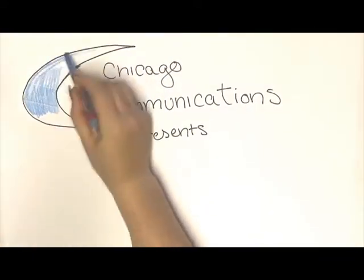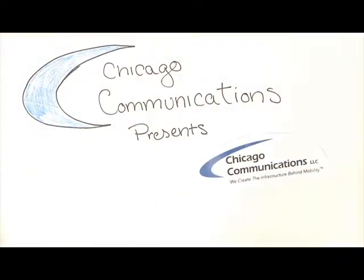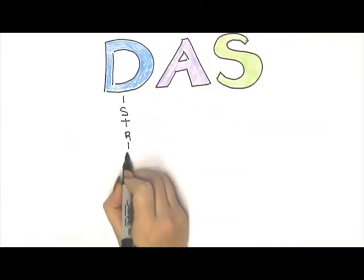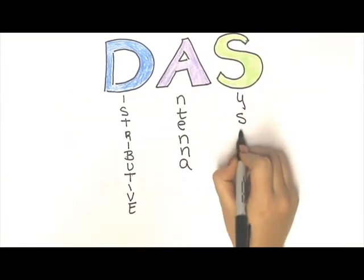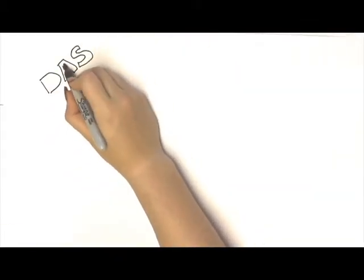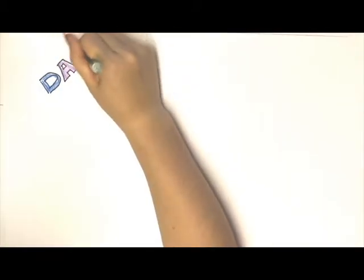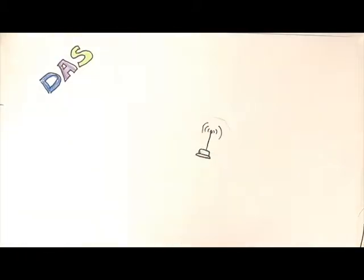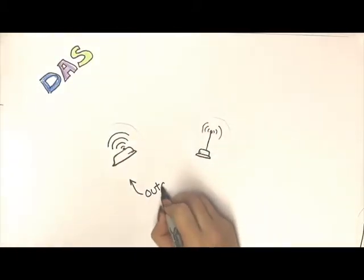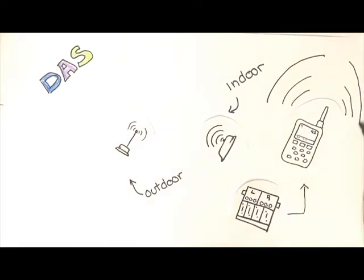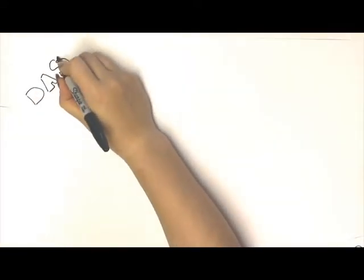Chicago Communications offers professionally engineered distributive antenna systems to help your business's in-building communication needs. A distributive antenna system is a network of antennas, both indoor and outdoor, along with bidirectional amplifiers that amplify the strength of your radio and commercial carrier signals and frequencies to provide more reliable in-building communications coverage.